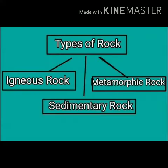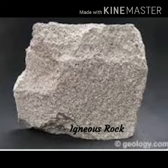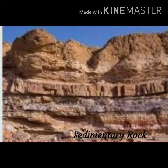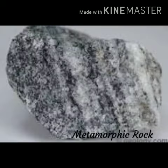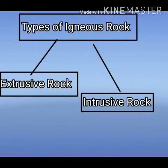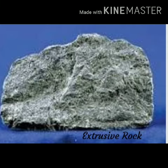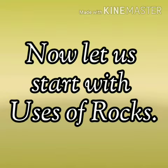Rocks have three types. Number 1, igneous rock. Number 2, sedimentary rock. Number 3, metamorphic rock. Out of all these rocks, only igneous rock has two more types. Number 1, extrusive rock. Number 2, intrusive rock.